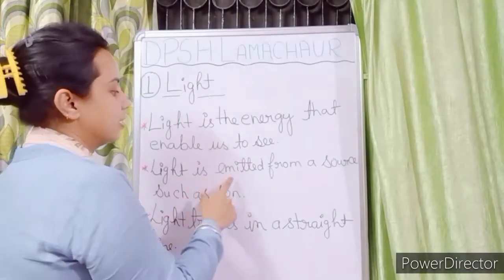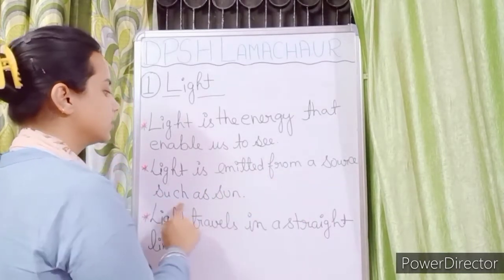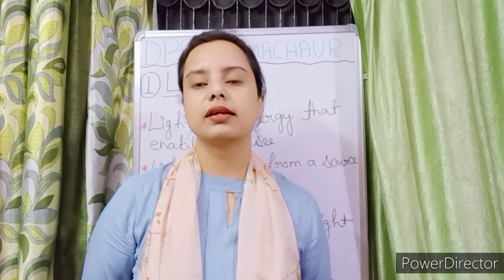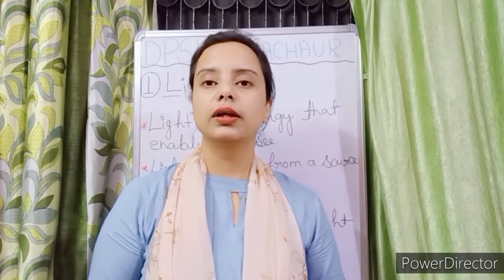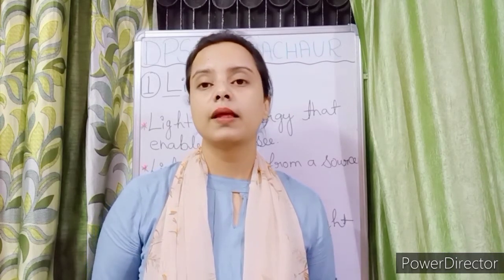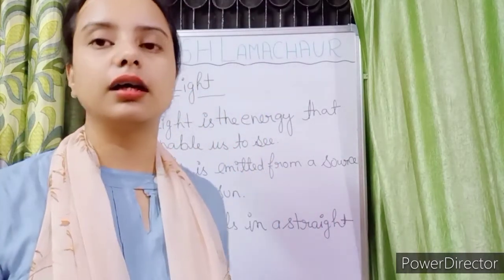Light is emitted from a source such as the sun. The sun is a natural source of light. We can also use bulbs as a light source — that is another source of light.